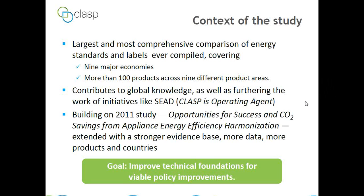A few questions to think about as we go through the presentation: As we discuss different product opportunities, are there products for which international standards organizations such as ISO or IEC should take the lead? What could CLASP or SEED do to further alignment opportunities? How much of this requires manufacturers to take the lead? And how exactly can CLASP help move alignment forward? With that, I'll hand off discussion of the study results to Mia Forbes-Puri.